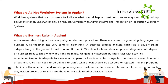What are business rules in Appian? A business rule is a statement describing a business policy or decision procedure. In business process analysis, each rule is usually stated independently in the general format: if A and B, then C. Workflow tools and detailed process diagrams both depend on business rules to specify how decisions are made. A decision diamond is adequate to show what happens if a loan is accepted or rejected, but dozens or even hundreds of business rules may be needed to clarify what should be accepted or rejected.